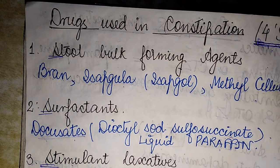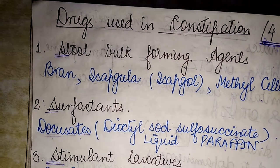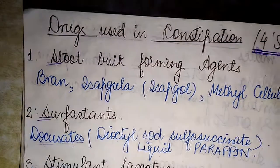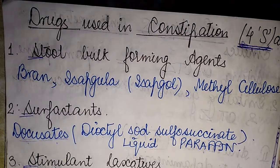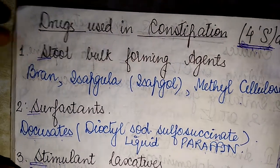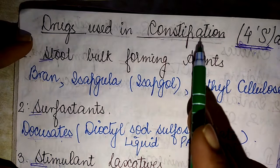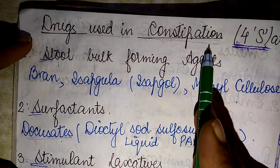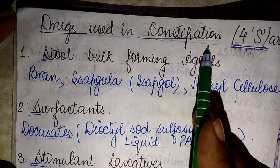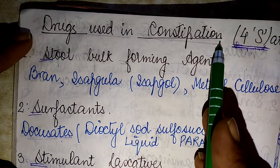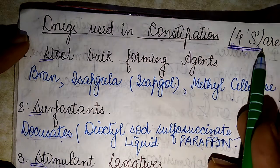Hello viewers. Today the topic of my discussion is the drugs used in the treatment of constipation. The classification of these drugs includes a mnemonic I have made: the 4S.